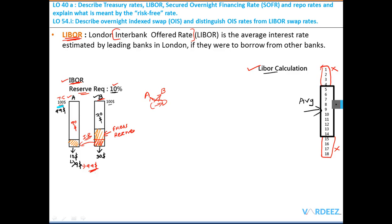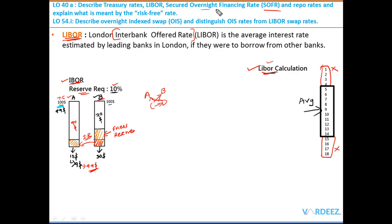Even though LIBOR is used very heavily in the derivatives market, there has been some manipulation of LIBOR. For example, if a bank is about to receive a payment in a derivative contract, it may have an incentive to quote higher rates to profit from the transaction. There are plans to transition from LIBOR to another rate, known as the Secured Overnight Financing Rate, or SOFR.